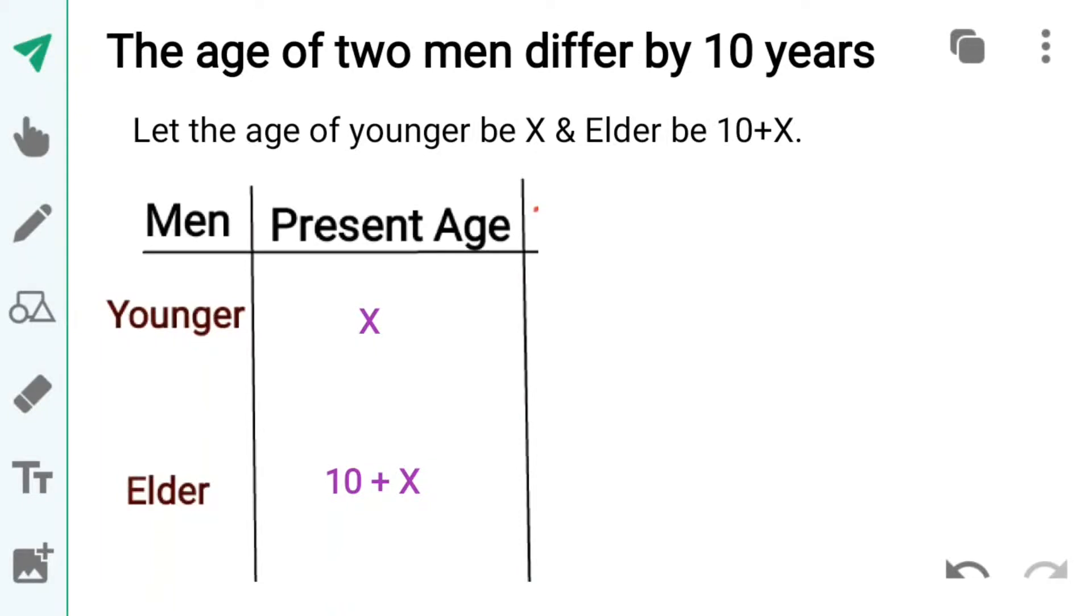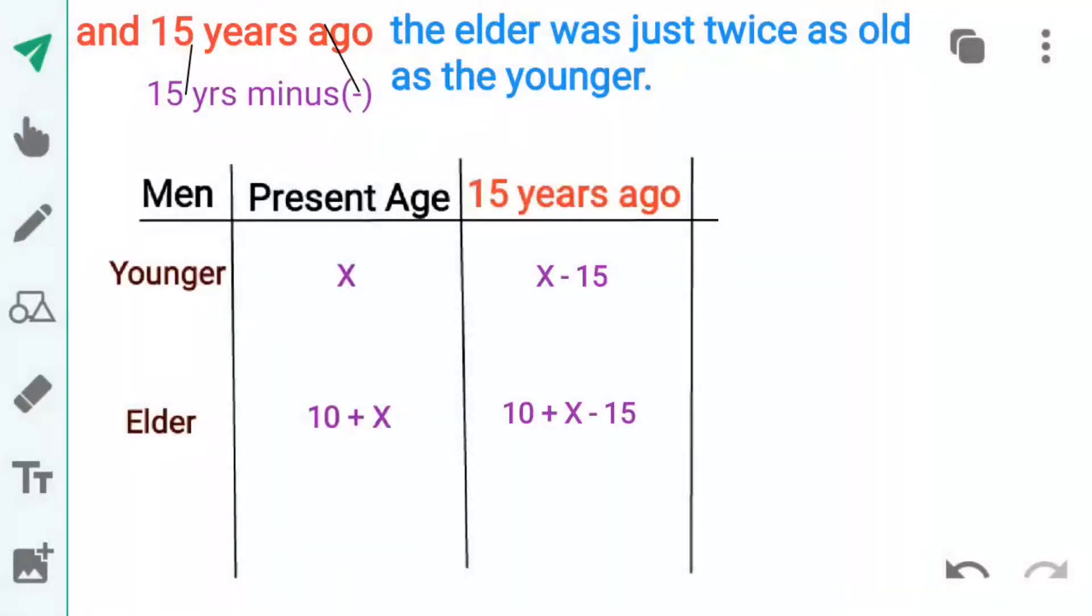Aur dono ki age ko meinne present age box mein likh liya hai. Ab second statement ke first part se dono ki 15 years pehle ki age ki expression banayengge. Dono ki present age mein 15 minus karne par 15 saal pehle ki age ban jayeggi. Jo younger ki x minus 15 aur elder ki 10 plus x minus 15 hogi.